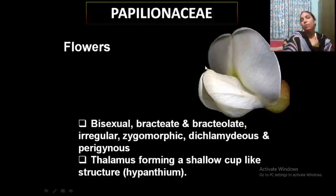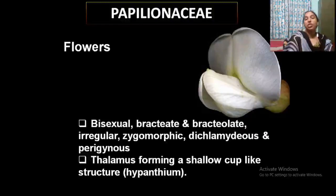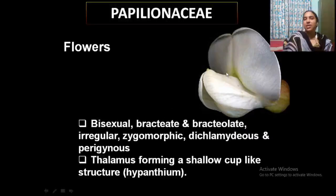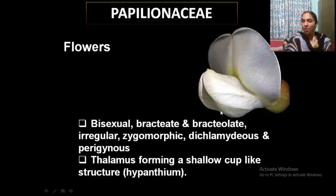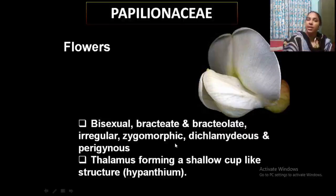Flowers are bisexual, with both male and female parts. They are bracteate and bracteolate, usually irregular and zygomorphic — when cut open you will never get two equal halves. They are dichlamydeous, meaning both petals and sepals are present, and in a perigynous condition. The thalamus forms a complex hypanthium structure, which is a common feature of these flowers.